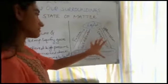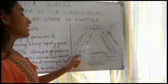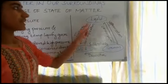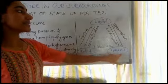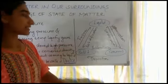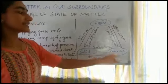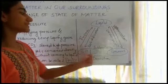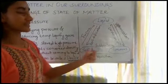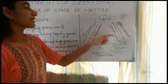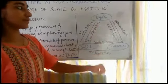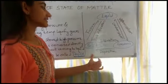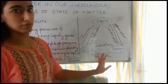Let us recall all the processes now. When solid changes into liquid it is known as fusion. When liquid changes into gas it is vaporization. When solid changes directly into gas it is sublimation. When liquid changes to solid it is solidification. When gas changes into liquid it is condensation, and when gas changes directly to solid it is deposition.